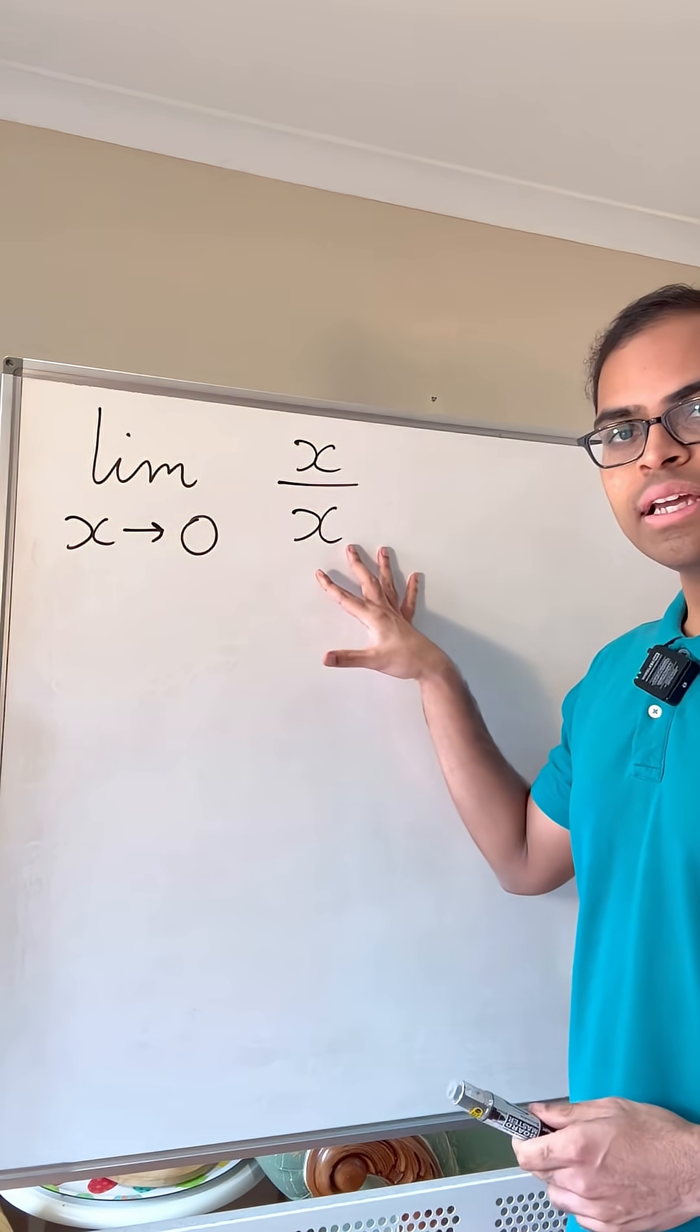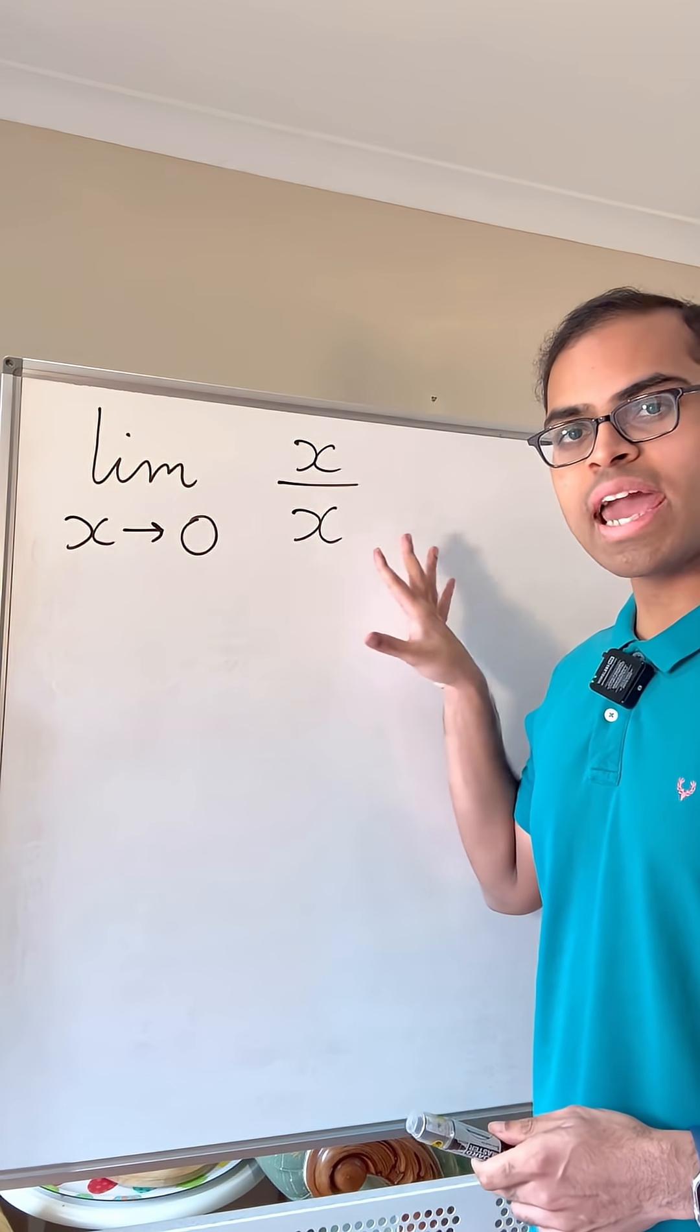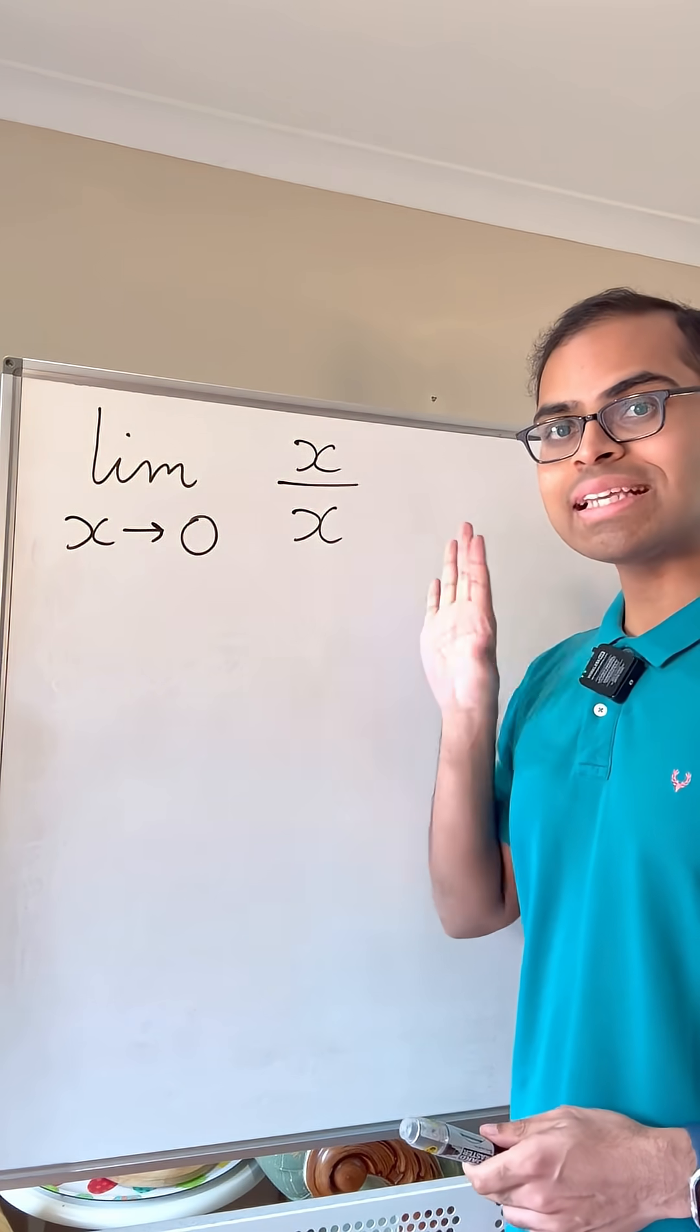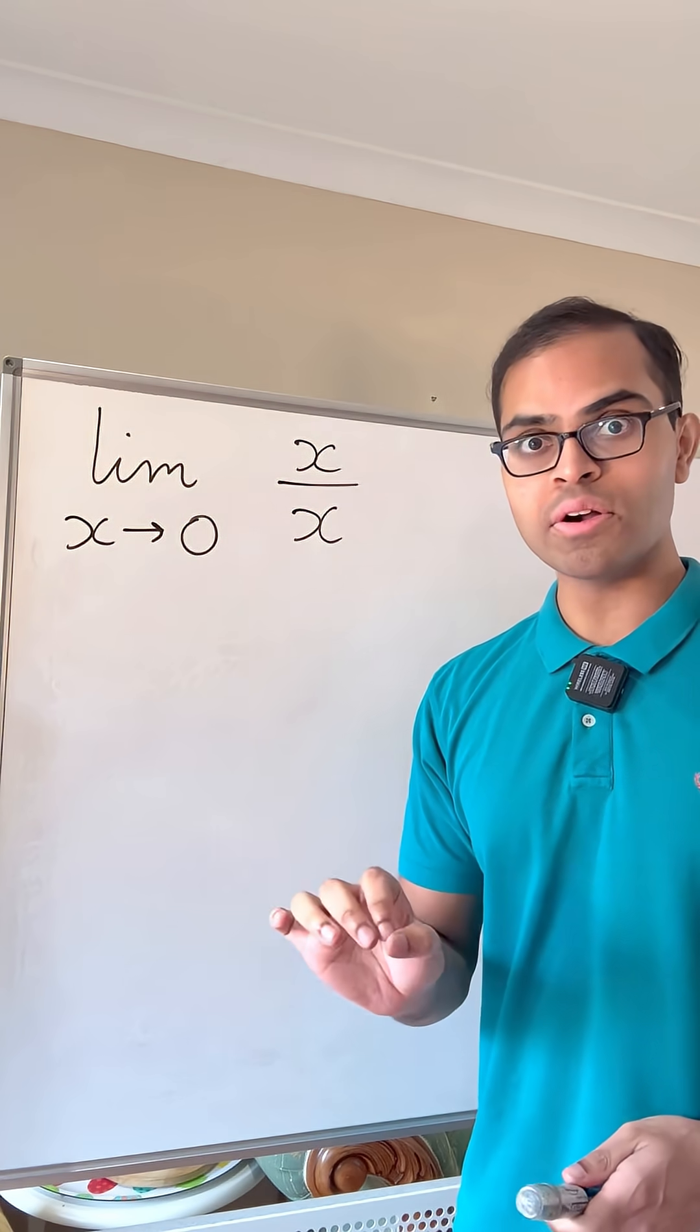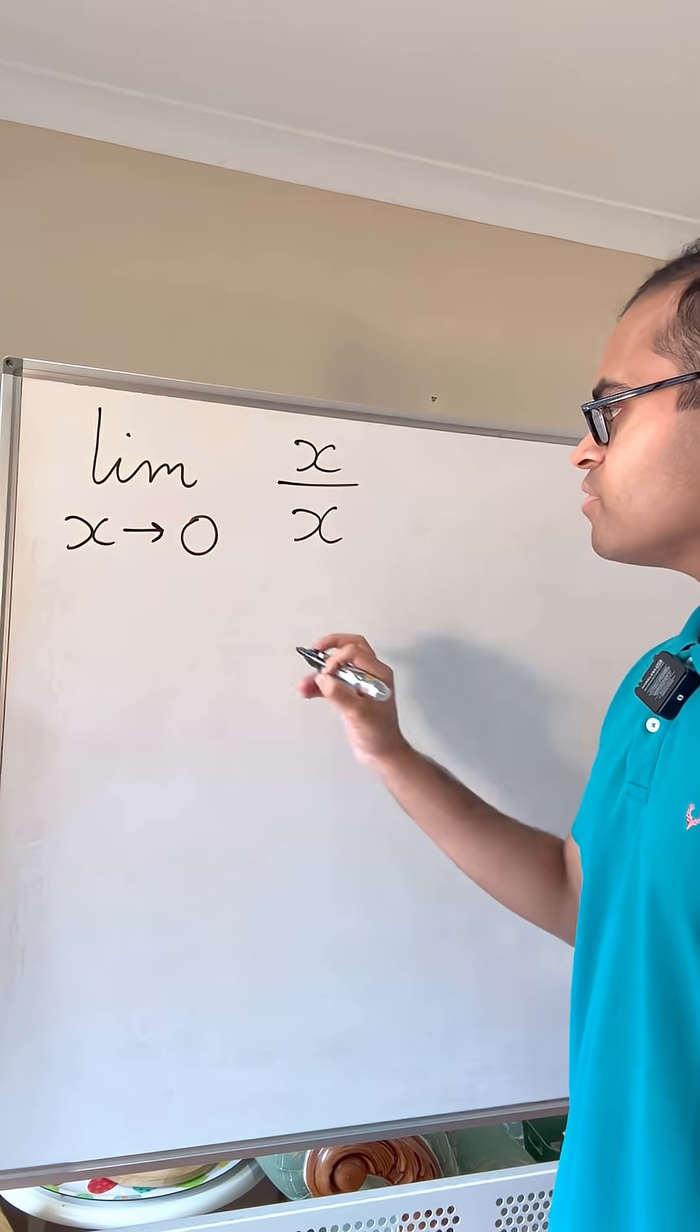So what this means is what does the quantity x over x approach as x approaches 0 but x is not quite equal to 0? So for example, we take numbers very close to 0.